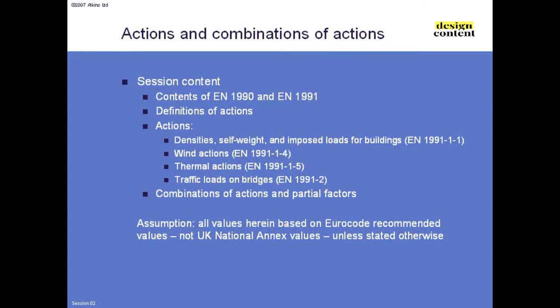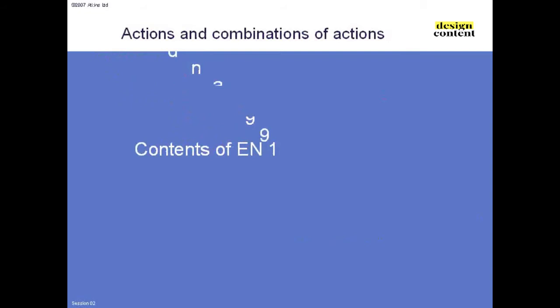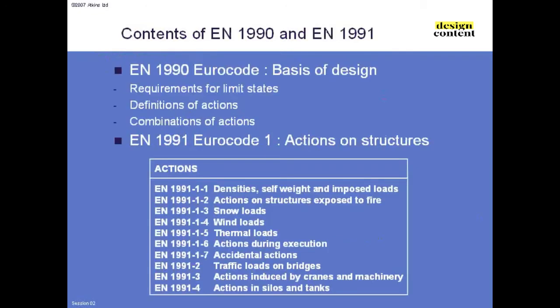A quick reminder of what's in Eurocode 0 and Eurocode 1. Eurocode 0 defines all of the actions, gives the definitions, and covers the combinations. It doesn't deal with actually calculating actions — for that we need Eurocode 1, potentially all ten parts, though the last two covering actions induced by cranes and machinery and actions in silos and tanks aren't terribly relevant to bridges.